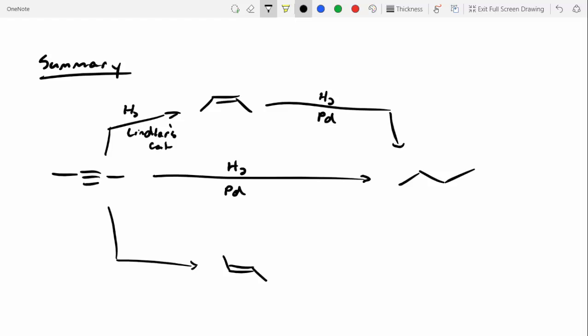What reagent would we need to go to our trans-alkene? Sodium. Yeah. Sodium metal. And what else? Liquid. Yeah, liquid ammonia. And then if we want to go from our alkene to our alkane, we can use hydrogen gas and palladium, platinum, or nickel. Any of those will work.